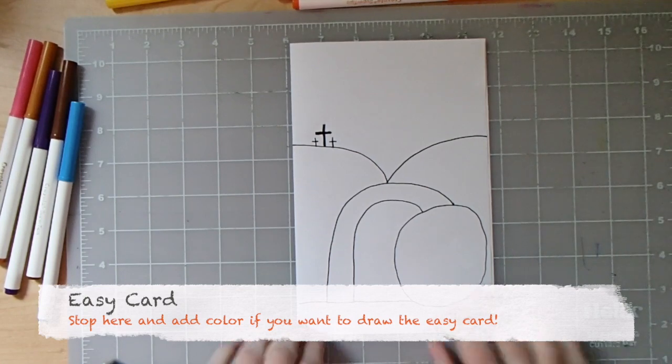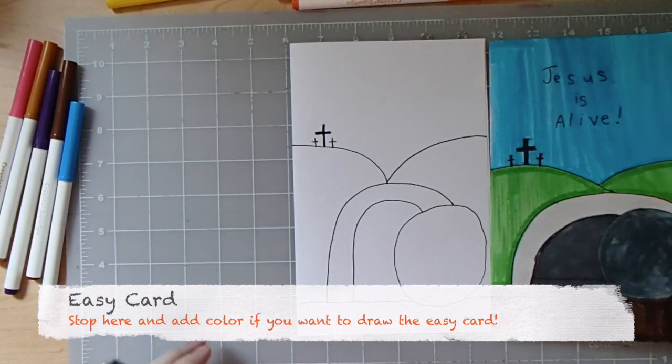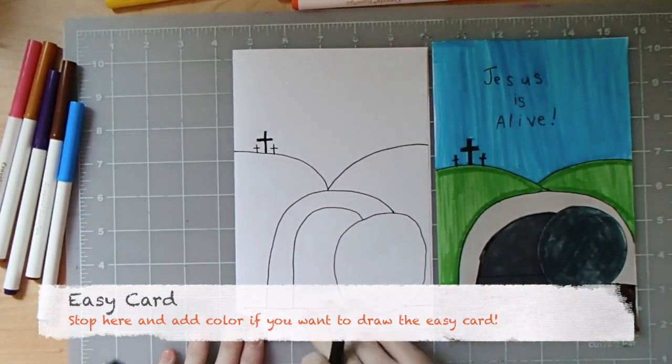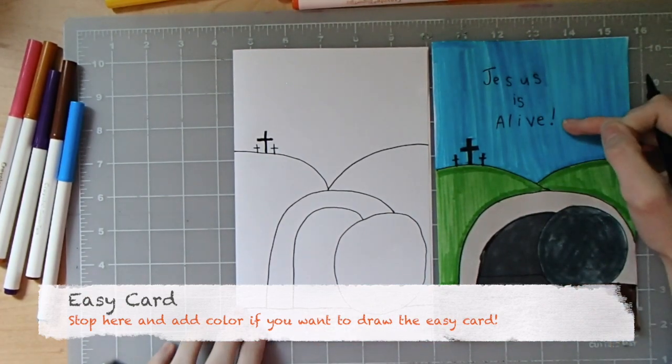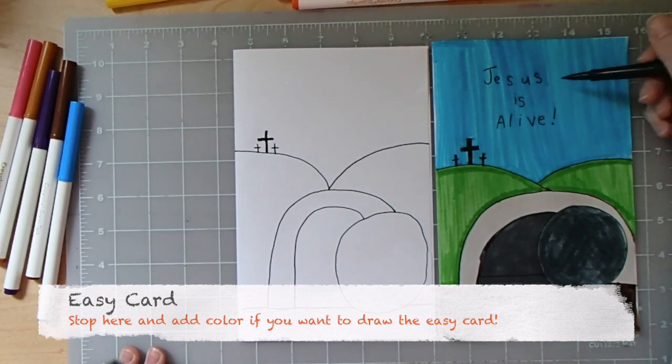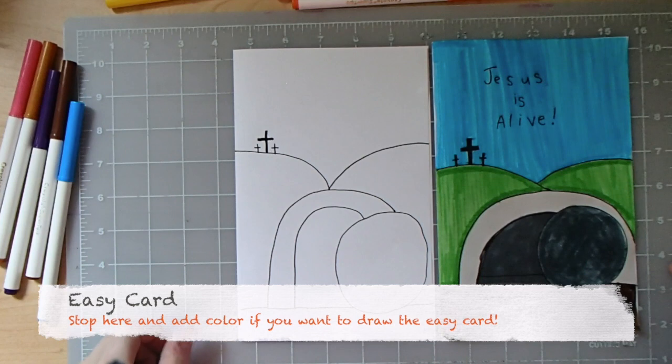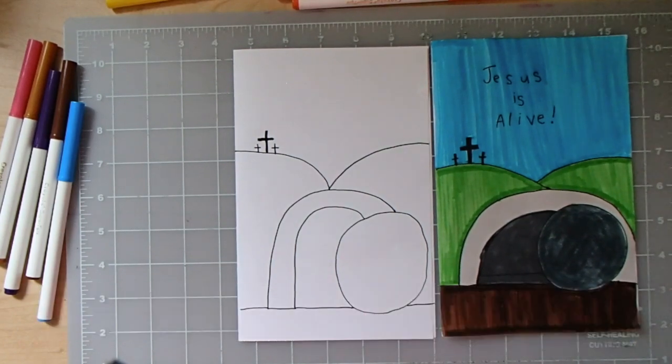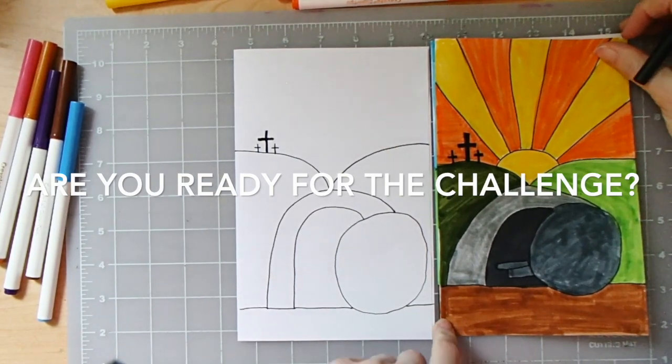Alright, at this point you could stop here and that would be easy mode. For my Easter card, for easy mode Easter card, if you are looking for a simple card, I would stop here. You could write the words 'Jesus is alive.' If you want to pause the video now so you can see how I wrote Jesus is alive on the front of my Easter card, you're welcome to do that now. But if you're in the mood for a challenge, I invite you to take a look at my hard mode Easter card.